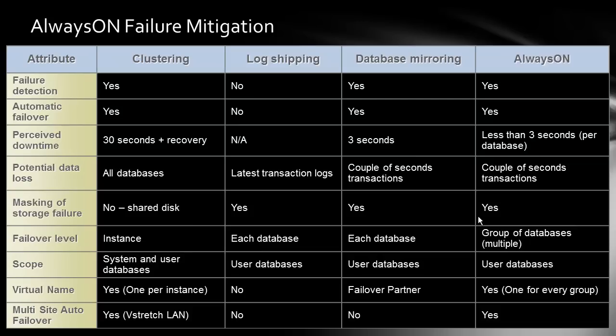For virtual names, clustering provides one virtual name per instance. Log shipping has no virtual names — you must do failover manually. With database mirroring, clients configure a failover partner at the client level, and .NET and Java do support that feature. With Always On, you can create multiple availability groups and for each one have a different virtual name. If you have multiple applications running databases on the same server, you can club groups of databases and provide each application its own virtual name, enabling much better load balancing with minimal manual effort.